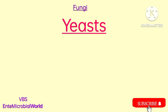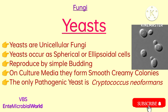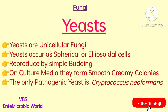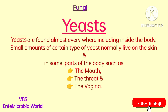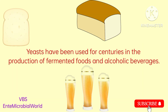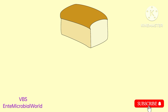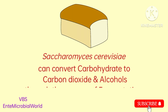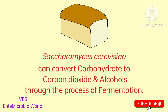Yeasts are the simplest type of fungus. Yeasts are unicellular fungi which occur as spherical or ellipsoidal cells and reproduce by simple budding. On culture they form smooth creamy colonies. The only pathogenic yeast is Cryptococcus neoformans. Yeasts are found almost everywhere including inside the body. Small amounts of a certain type of yeast normally live on the skin and in some parts of the body such as the mouth, throat and vagina. Yeasts have been used for centuries in the production of fermented foods and alcoholic beverages.